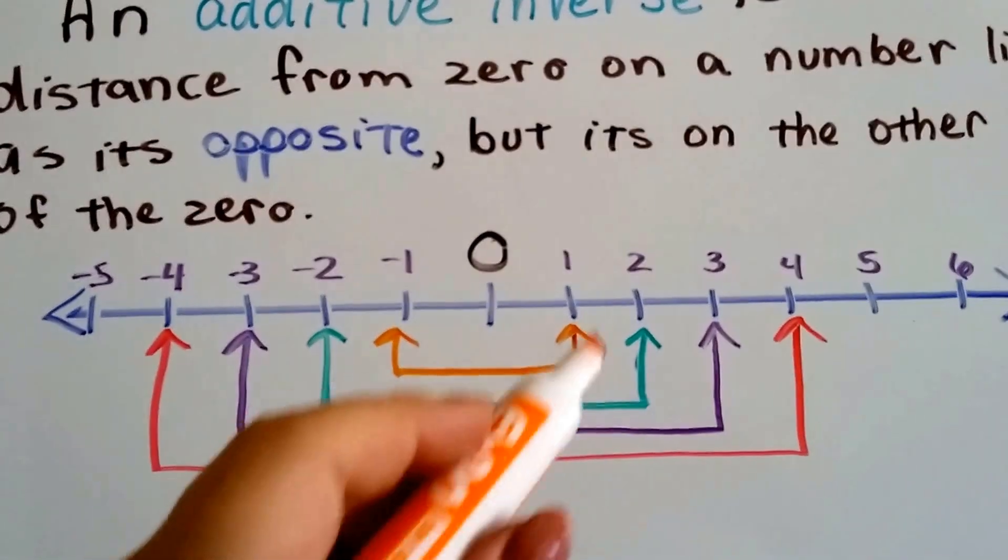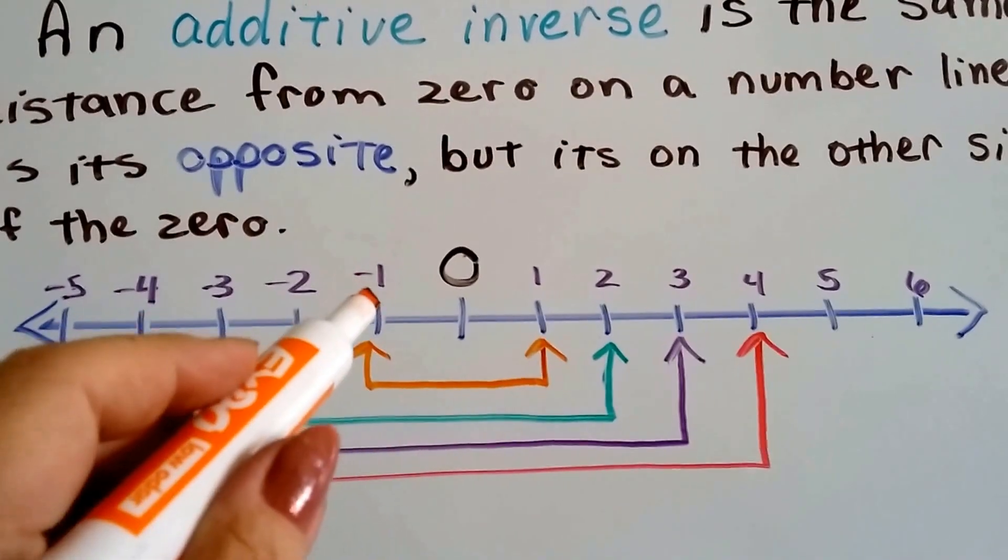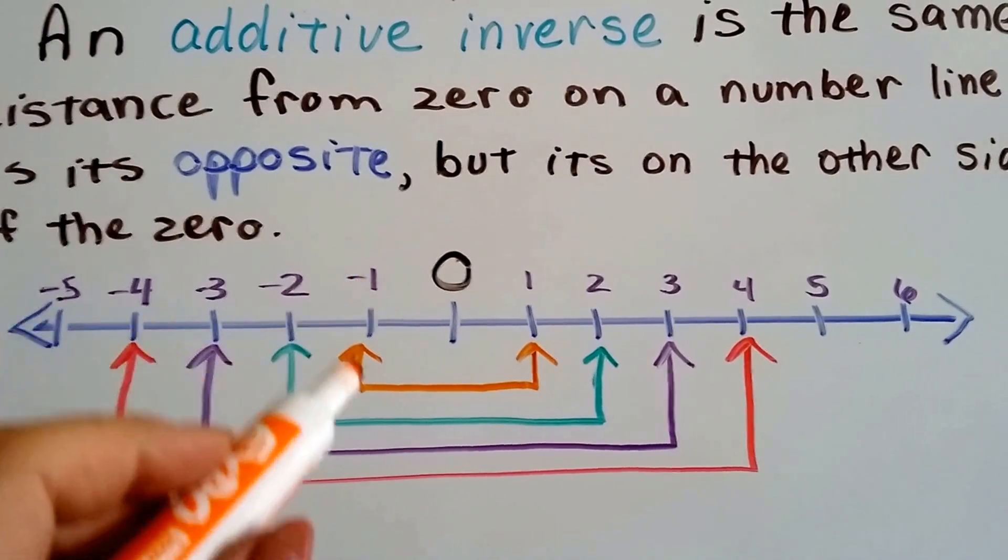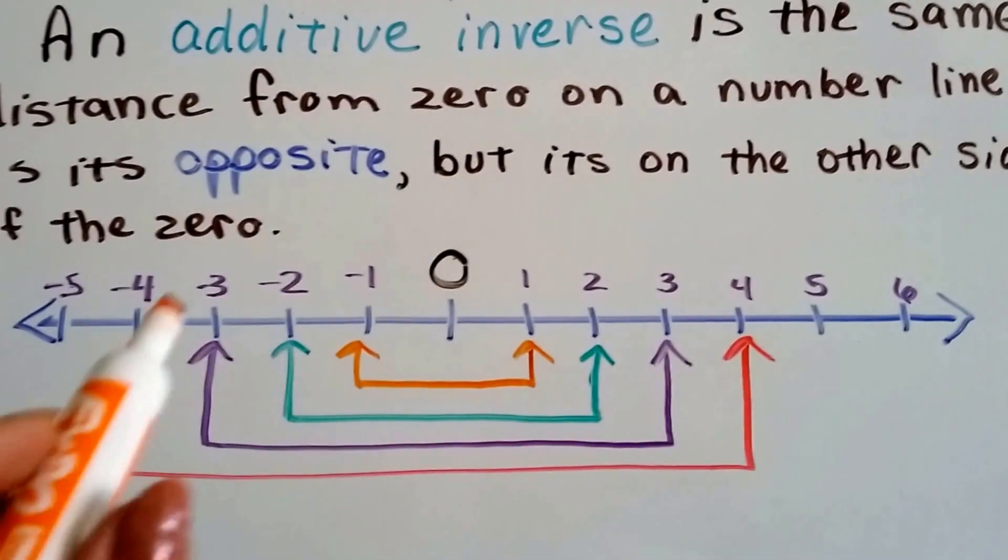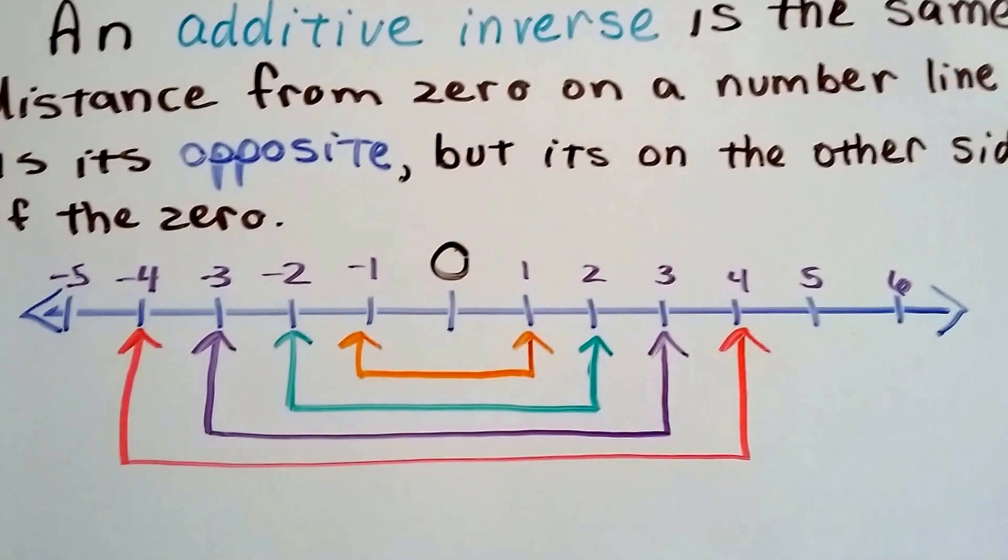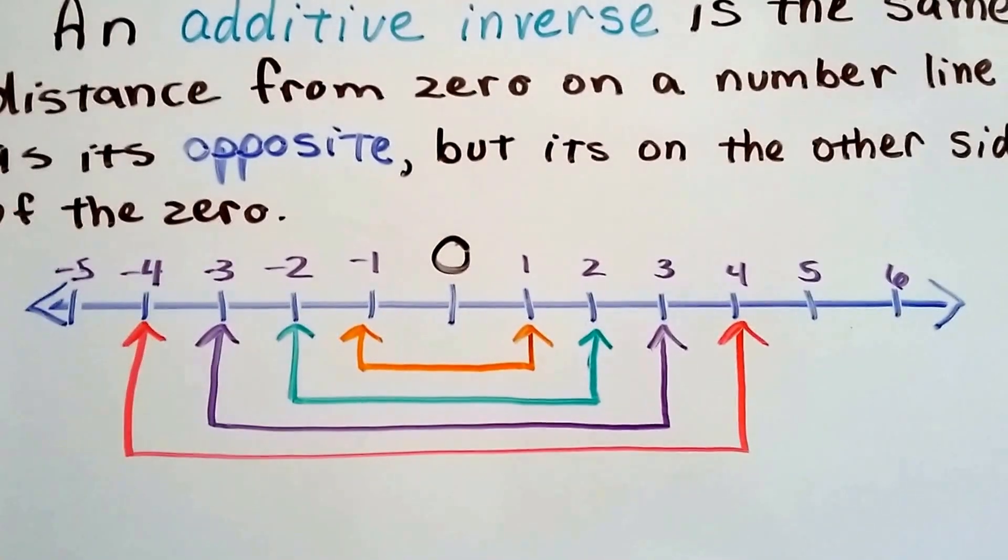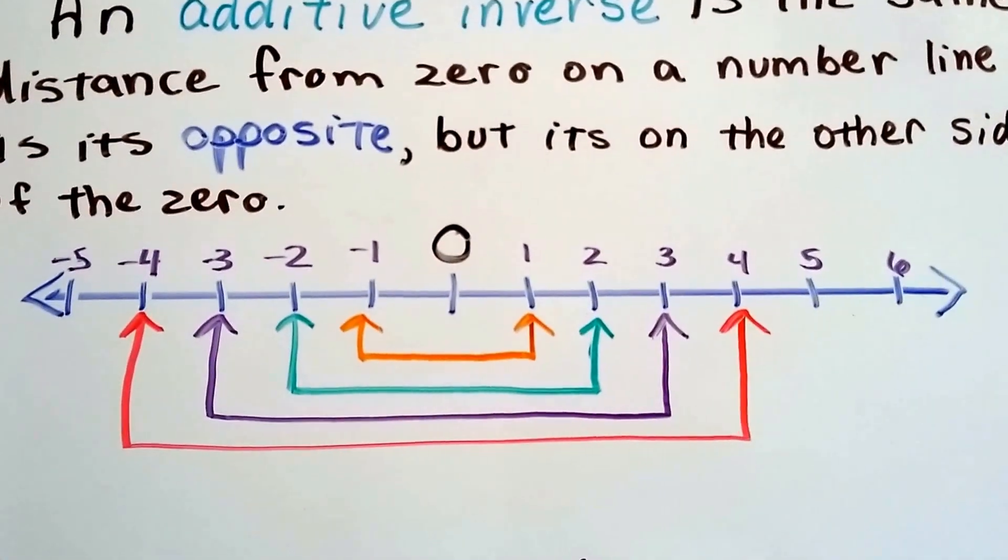The additive inverse of a positive 1 is a negative 1, and the inverse of negative 1 is positive 1. That's why the arrows are going both ways, because they're the inverse of each other. And this happens infinitely on each side of zero on the number line.